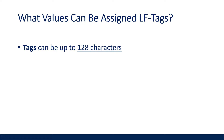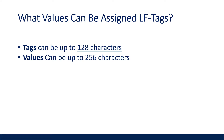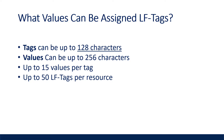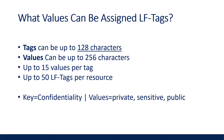Tags can have keys up to 128 characters, values up to 256 characters, up to 15 values per tag, and up to 50 LF tags per resource. The characters for key-value pairs can really be anything that you want.